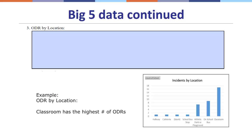Moving along, the next section asks us to look at the number of ODR incidents that occurred by location. The chart in your PBIS folder also has this information. According to this graph, the most referrals came out of the classroom for the month. In the previous slide, I saw that 11:30 AM had the most referrals and hypothesized it was lunchtime in unstructured settings. But now looking deeper into the data, the most referrals are actually coming from the classroom, so I want to go back and reconsider my hypothesis and ask what behaviors are coming from the classroom and why they're being sent to the front office.